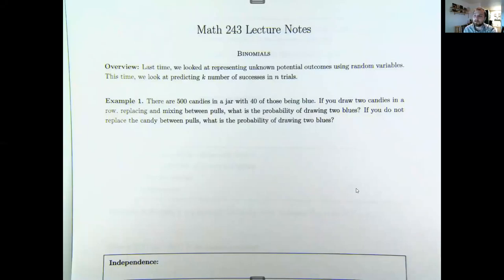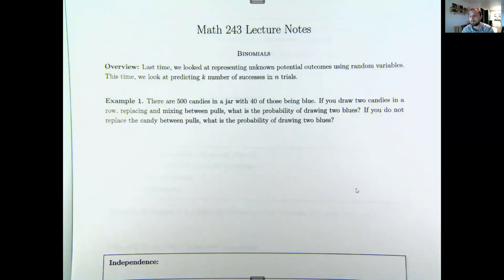This video continues the lesson on random variables and looks at a specific kind called binomials. Binomials determine the likelihood of getting k successes in N trials. This could be something like what's the likelihood that I get heads 10 times if I flip a coin 25 times, or more complicated things like what's the likelihood that there are at least 20 people that are O negative out of 200 people sampled.